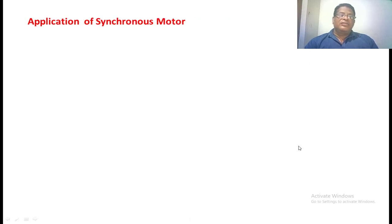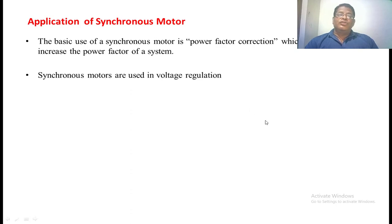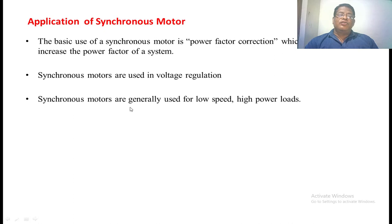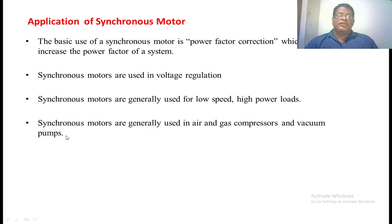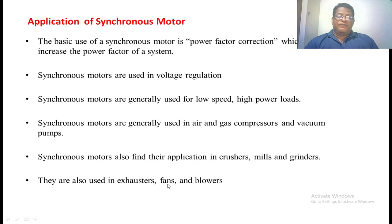The different applications of a synchronous motor are: in power systems, the over-excited synchronous motor acts as a synchronous condenser and is used to improve the overall power factor — this is its primary application, i.e., power factor correction. The synchronous motor is a constant-speed motor and is used where constant speed is required. It is also used in voltage regulation, and generally used for low-speed, high-power applications. Synchronous motors are used in air and gas compressors, vacuum pumps, mills, winders, exhausters, fans, and blowers.